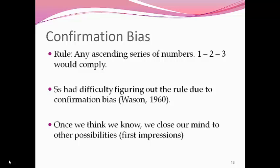Basically, the rule is any ascending series of numbers. For example, 1, 2, 3 would also work. There was a subject when researchers were studying cognition. One subject had difficulty figuring out the right rule because of confirmation bias. Basically, they said, well, 2, 4, 6... I wonder if 8, 10, 12 works? Yes, it does. Does 14, 16, 18 work? Yes, it does. The subject thought it was increasing even numbers by 2, and then they stopped looking for other solutions to the problem. But notice, if we go back up to the rule, 1, 2, 3 is not increasing by even numbers. So once we think we know, confirmation bias suggests that we close our mind to other possibilities. First impressions are that way. When we have a first impression of somebody, we stop looking for information that would refute our beliefs or go against our beliefs.